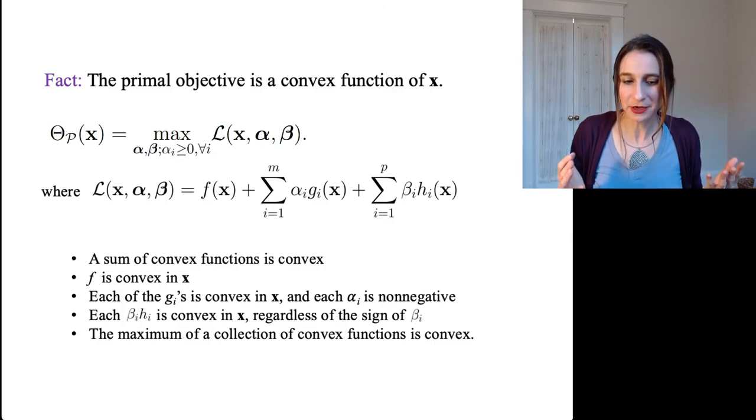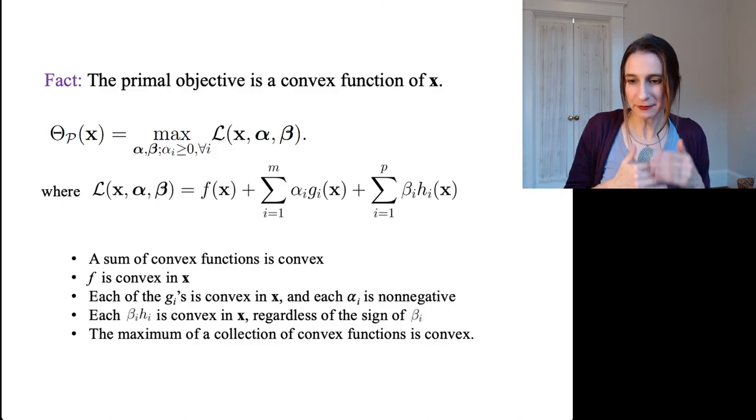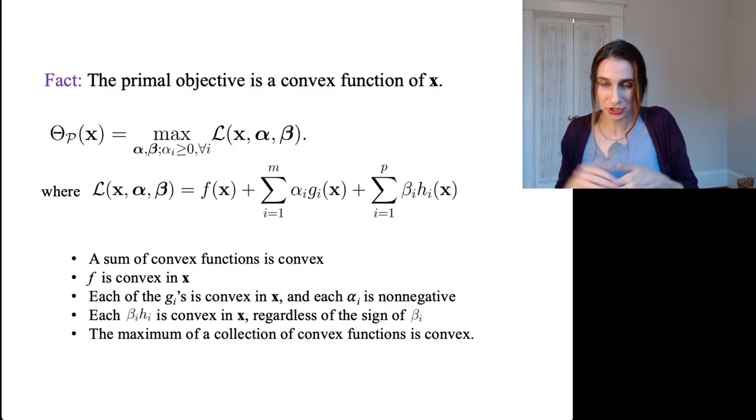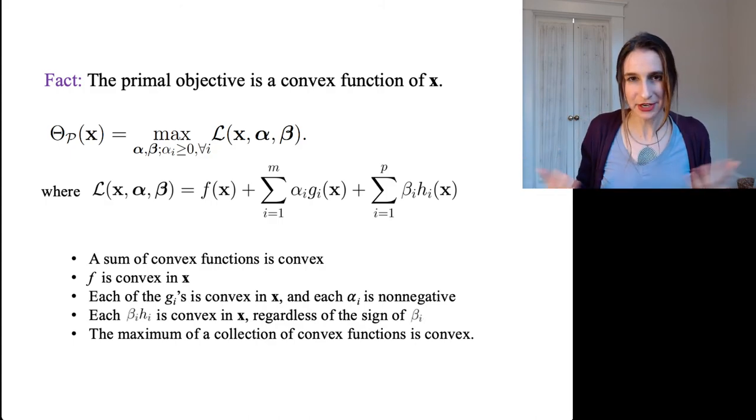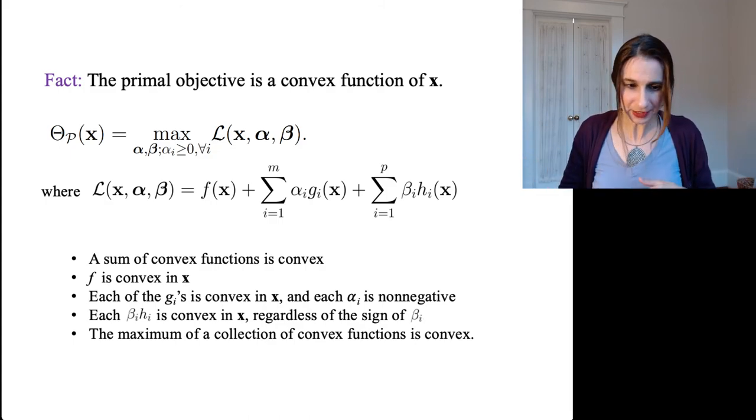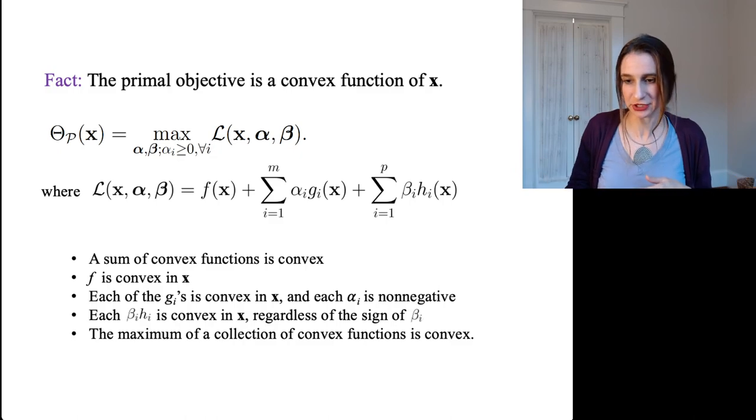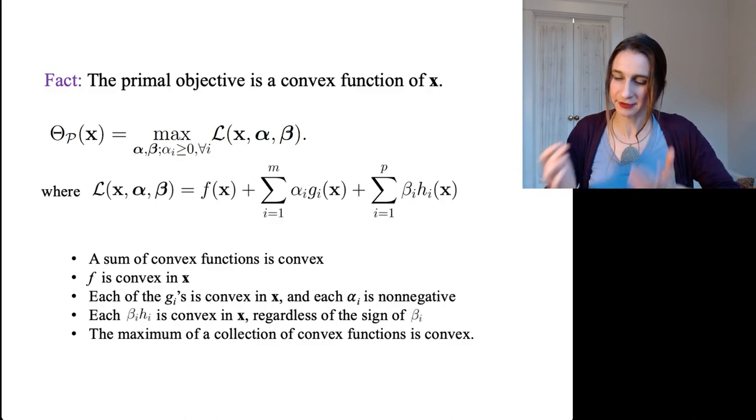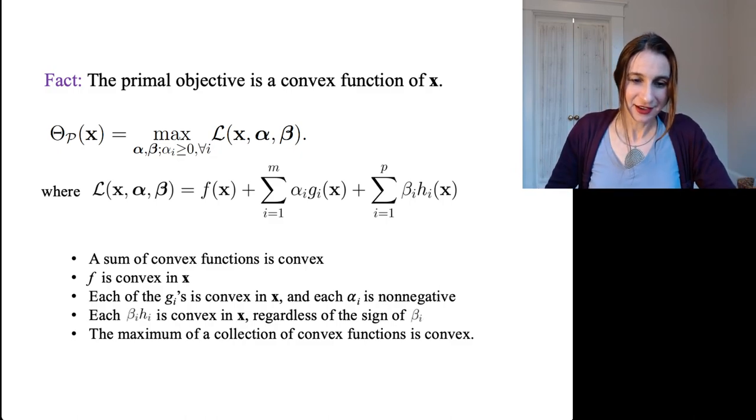well that's the maximum of a collection of convex functions because, you know, if you fix alpha and beta you get a convex function as we showed. And so the maximum of a convex function, the maximum of a collection of convex functions is convex, and so that's what we have and we're good. However, I will mention that when we talk about the dual, it does not fare so well. It in fact is concave.